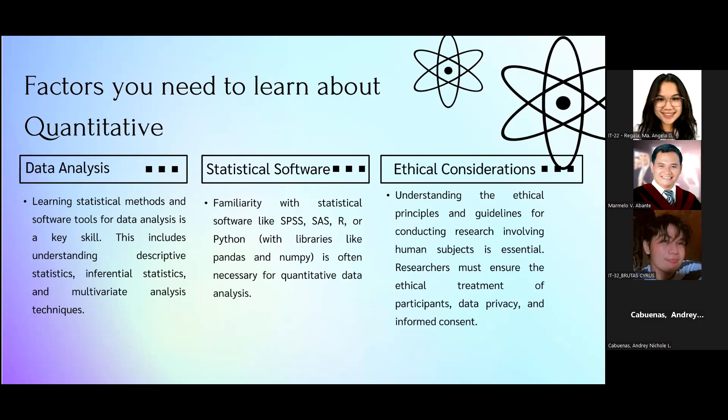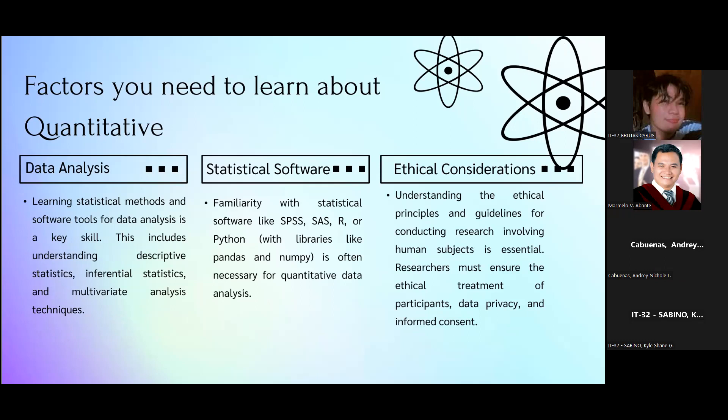In data analysis, learning statistical methods and software tools for data analysis is a key skill. This includes understanding descriptive statistics, inferential statistics, and multivariate analysis techniques. Statistical software: familiarity with statistical software like SPSS, SAS, R, or Python with libraries like Pandas and NumPy is often necessary for quantitative data analysis. Ethical consideration: understanding the ethical principles and guidelines for conducting research involving human subjects is essential. Researchers must ensure the ethical treatment of participants, data privacy, and informed consent.